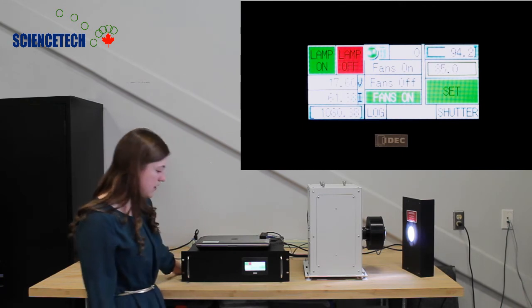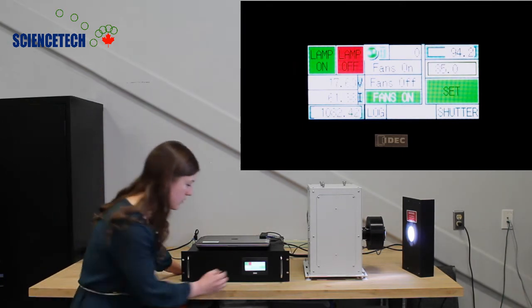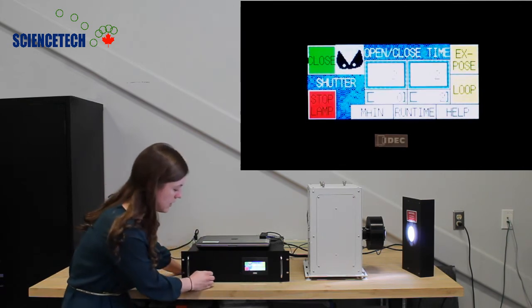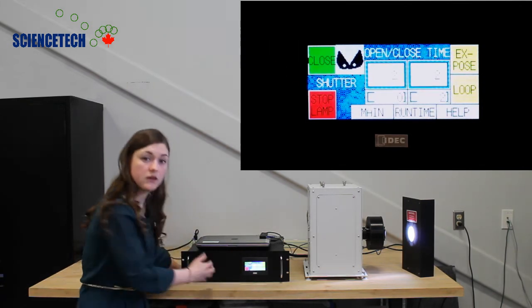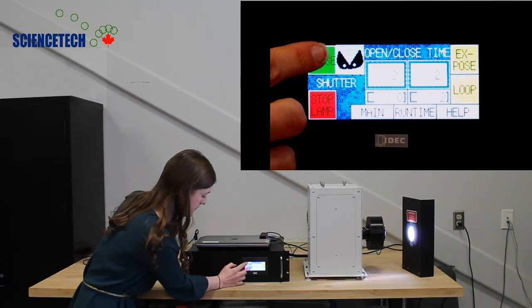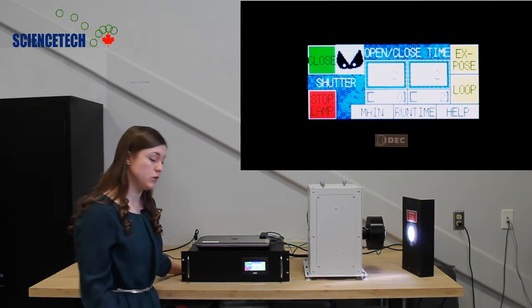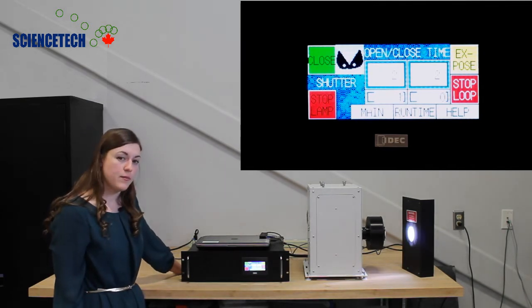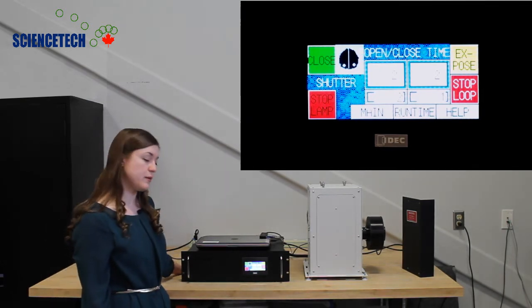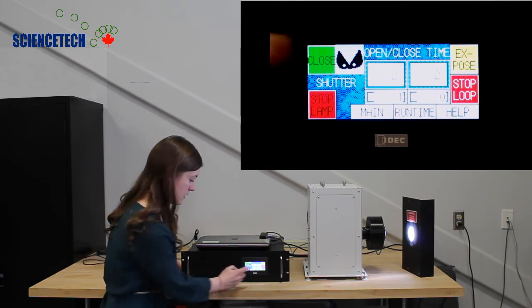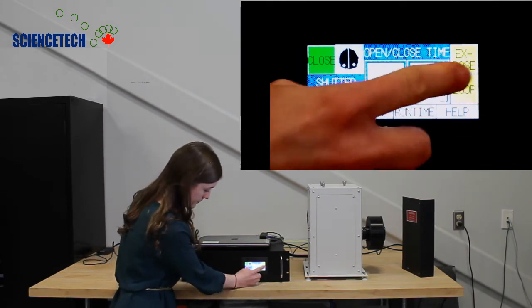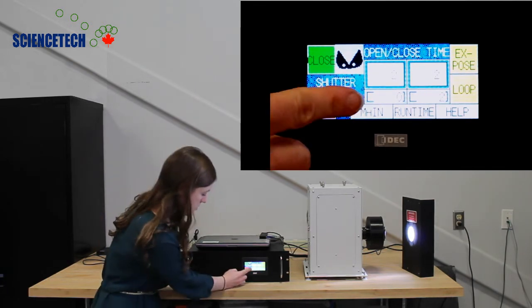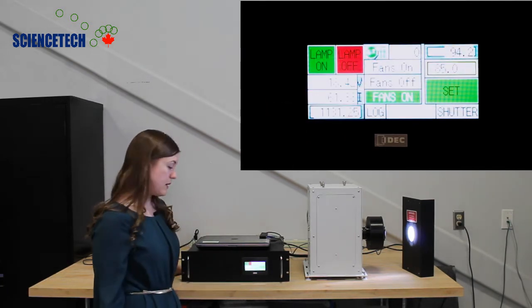When the lamp is on you can operate the shutter by hitting the shutter menu. Now you can manually close or open the shutter. Or you can set it to a loop. The timing between opening and closing for the loop is programmable. And at any time you can just stop it. You can return to the main menu.